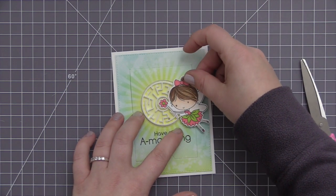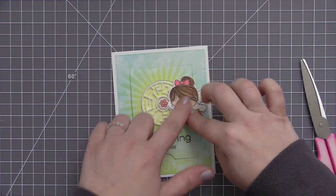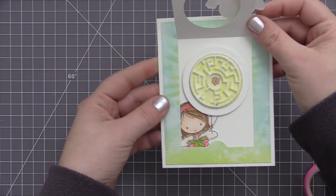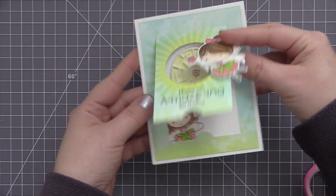So I added the sentiment at the bottom with some black licorice dye ink, and then I'm adhering that second fairy to the front of the card.